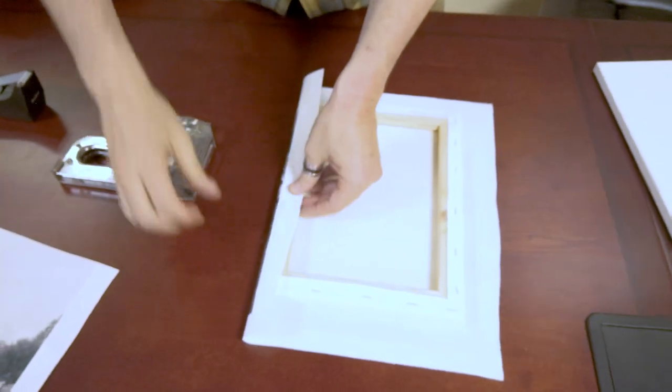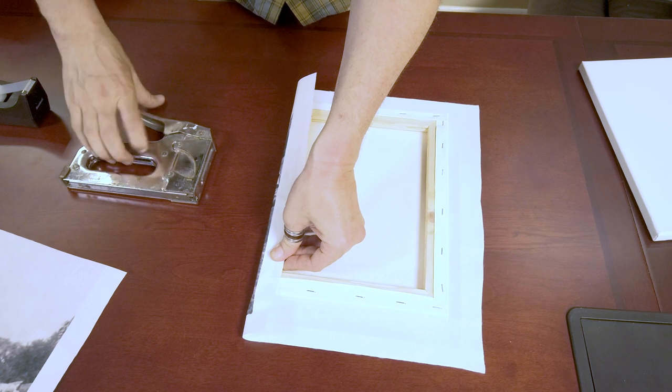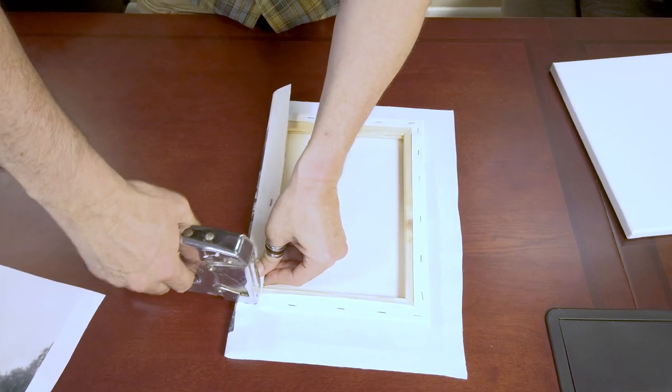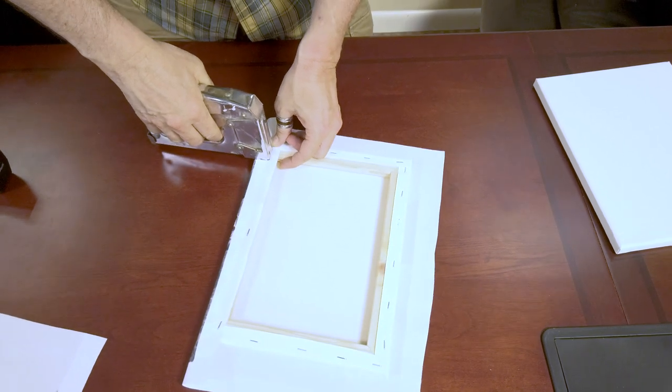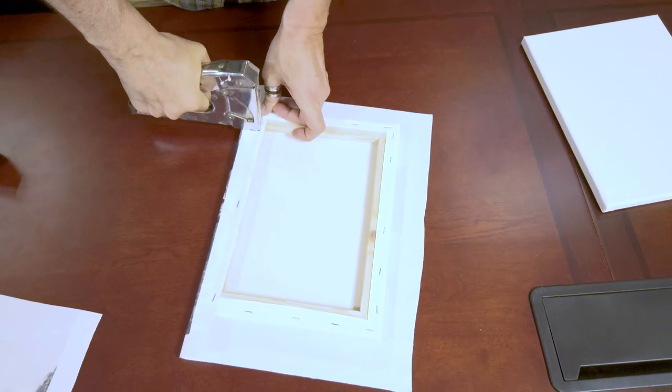So we're going to start with the side pieces and I use a staple gun. I like to do the middle first. I think you can see where I'm going with this.